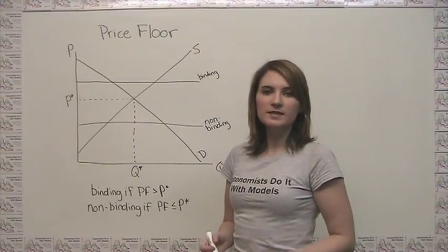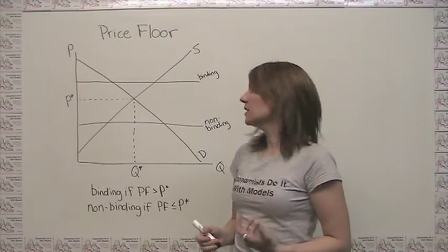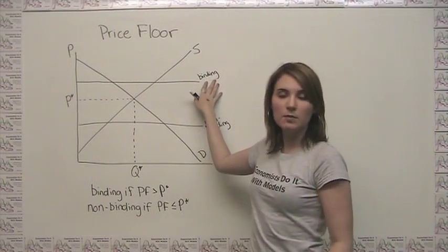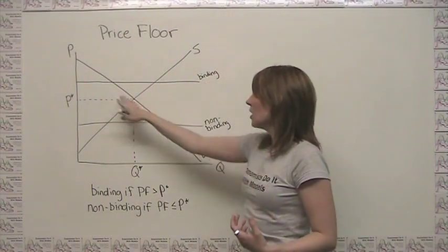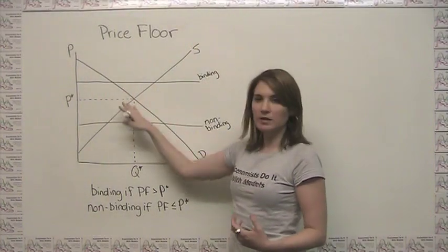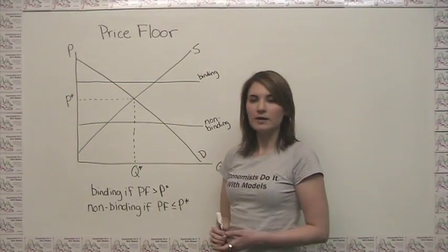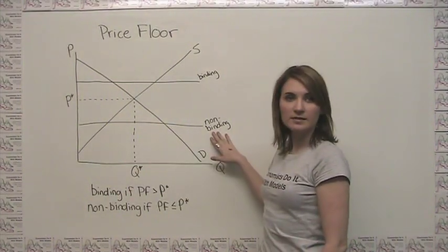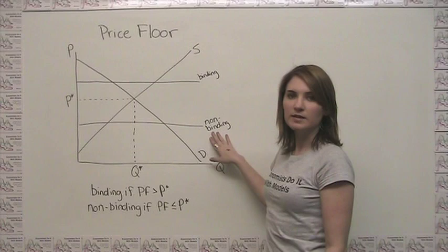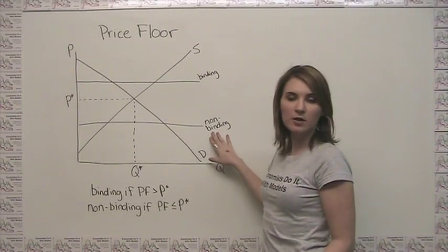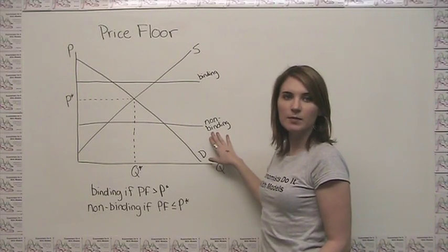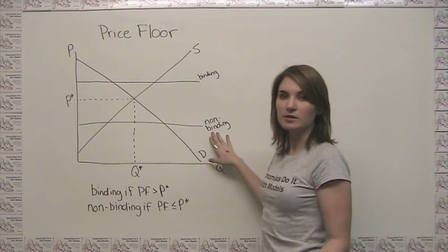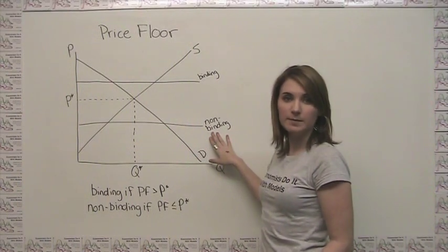Just like with price ceilings, we can have price floors that are either binding — meaning they actually affect the market price and quantity of an item — or we can have a price floor that is non-binding, meaning that, given the current market setup, that price floor is really not relevant in terms of equilibrium price and quantity.